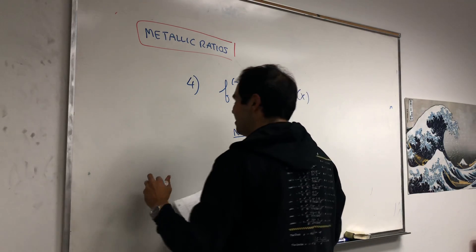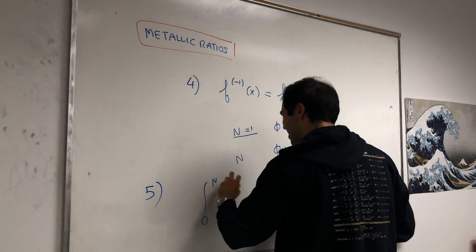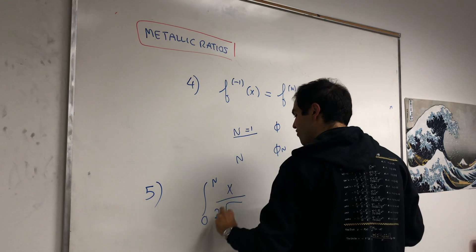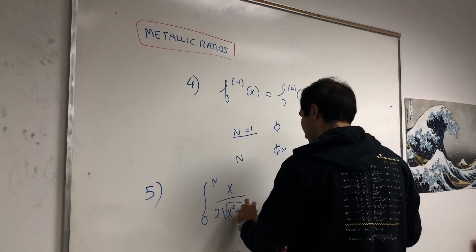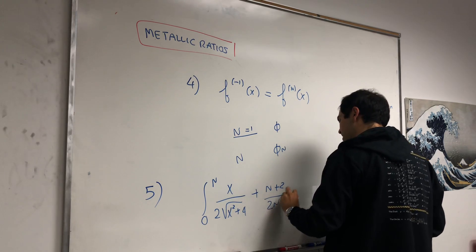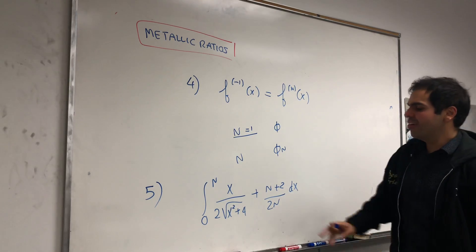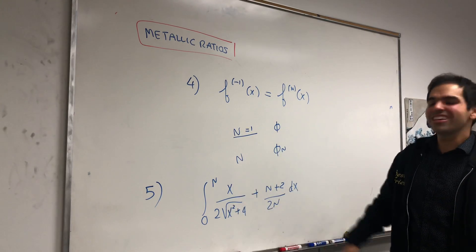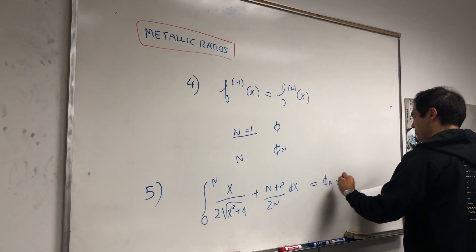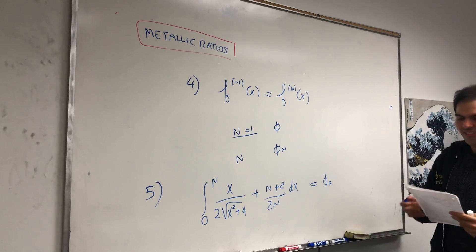Last but not least, there's something called the metallic integral. If you evaluate the integral of x over 2·sqrt(x² + 4) plus n plus 2 over 2n dx, using a substitution trick, the result equals phi_n. That's covered in another video I've either done or will do.